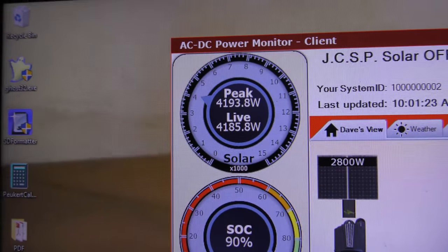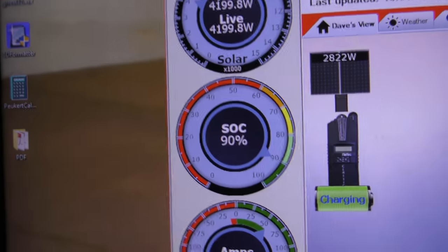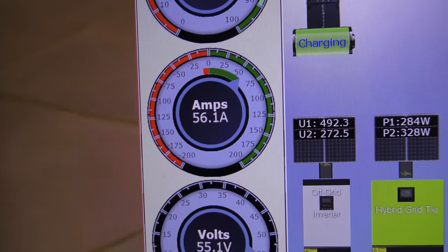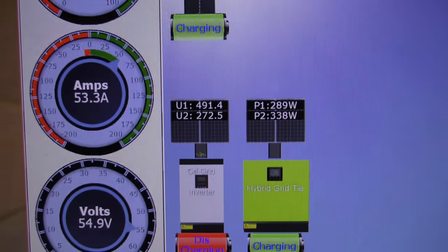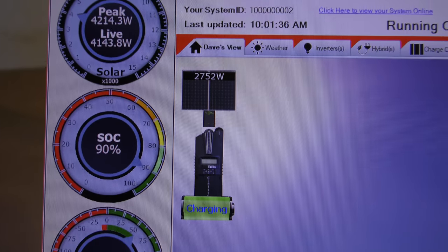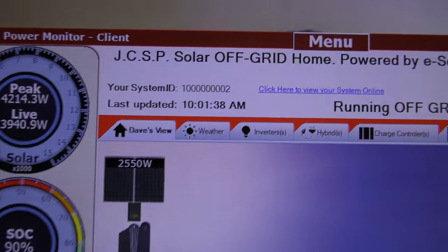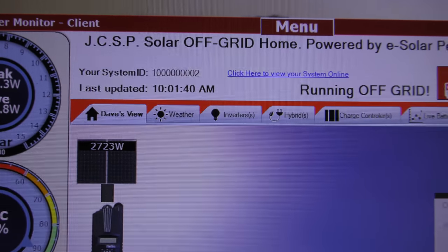That's the amount of solar coming off the roof right now, that's the battery state of charge, that's the amount of leftover amps feeding the batteries and the battery volts, and that's what all my different solar panels are doing. You can see it's just gone 10:01 in the morning.